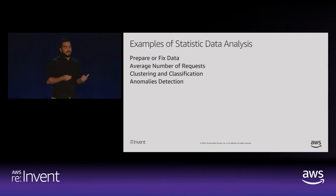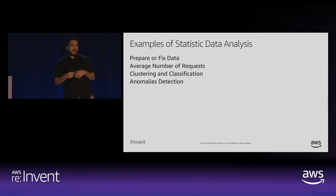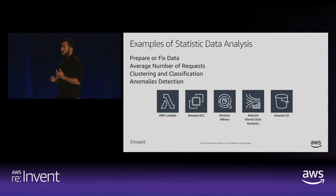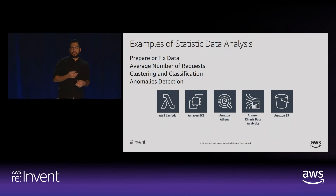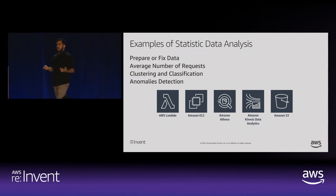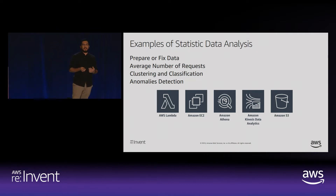Once you have that information, you'll be able to detect anomalies in the data your systems are collecting. AWS offers many services for applying these statistical data analysis methods. Traditionally you'd use AWS Lambda, EC2, and Amazon Athena to query data in a serverless way. You could use Amazon Kinesis to process data in real time. For storage, you could use S3. Let's take a look at a few architecture ideas where everything will make sense.